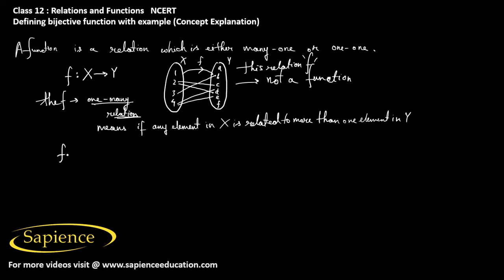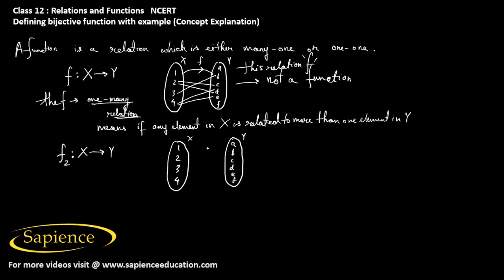Else if we have a relation f2 which also maps from X to Y, the sets are the same. The set X contains 1, 2, 3 and 4, and the set Y contains the elements a, b, c, d, e, and f. Suppose 1 is related to b, 2 is also related to b, 3 is related to c, 4 is related to e. So here 1 and 2 are both related to b — this is a many-to-one relation.